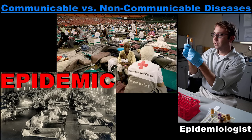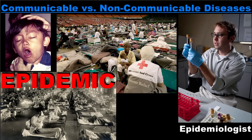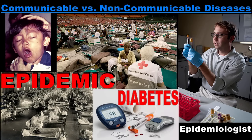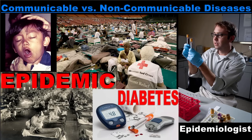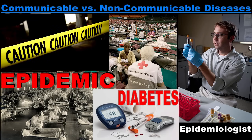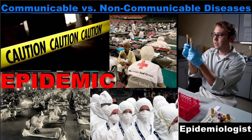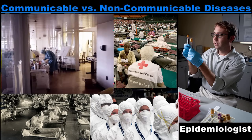Epidemics may occur as a result of the spread of a communicable disease, for example whooping cough, or an epidemic may refer to a non-communicable disease like diabetes. In both instances, the number of disease cases during an epidemic is higher than would normally be expected. When an epidemic occurs, epidemiologists work to contain the outbreak, which may involve quarantining infected individuals if the disease is contagious. During a quarantine, all the infected individuals are held in isolation to prevent the spread of the disease. Epidemics of non-communicable diseases do not require quarantines because they do not spread from person to person.